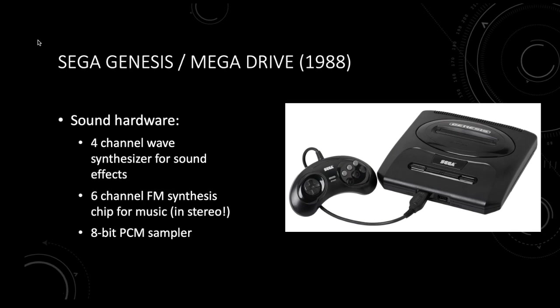The Sega Genesis has a more sophisticated sound system than the original Nintendo. There are only a few years between them — the original Nintendo hardware came out in 1983, so this is five years later. The Genesis has a four-channel wave synthesizer basically used for sound effects — that alone is the capability of the Nintendo. Three melodic channels, one noise channel. Then you're left with six full channels of stereo FM synthesis music. This allows the Genesis to imitate real instruments — you hear basses, drums, guitars, pianos. You hear real instrumental textures being simulated.